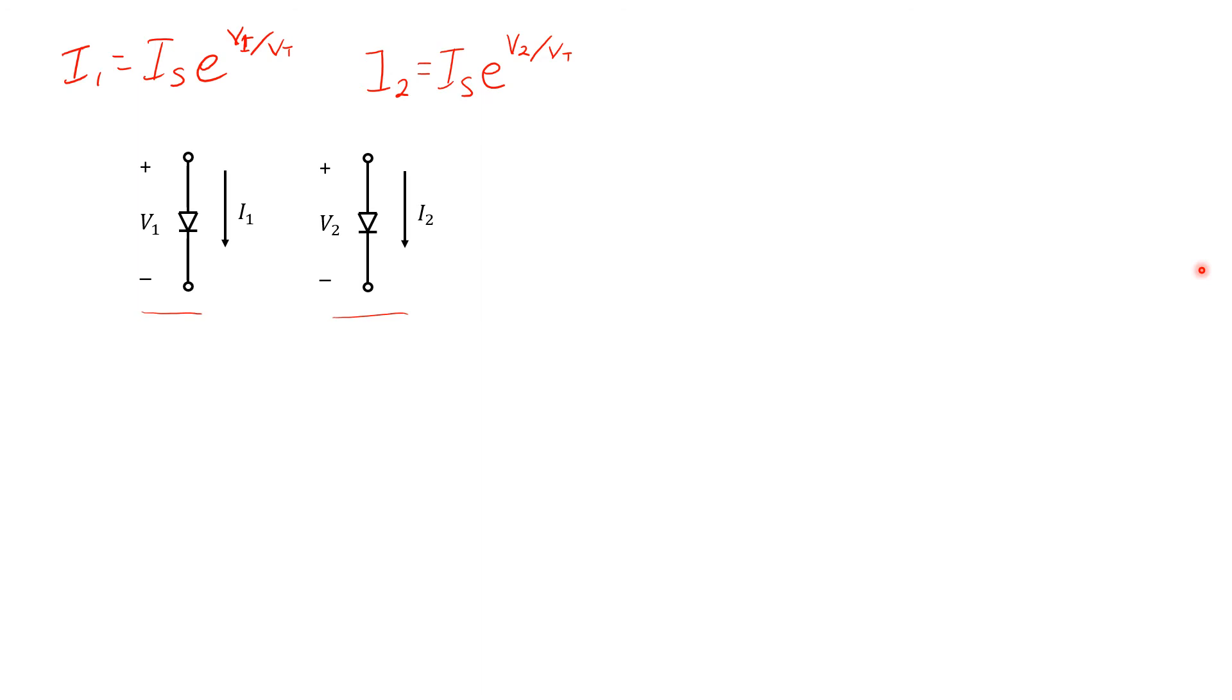Again, assuming the diodes are identical or in fact the same diode, then I-S would be the same in both cases. Taking the ratio of these two expressions, we get the following relationships between V1, V2, and I2, I1. The constants I-S cancel out, and we see that the ratio of currents in these two circumstances is exponentially related to the change in voltage between these two circumstances. If we take the logarithm of both sides, we get this relationship over here. That is, the change in the forward voltage drop across the diode is VT times the natural logarithm of the ratio of the two currents.